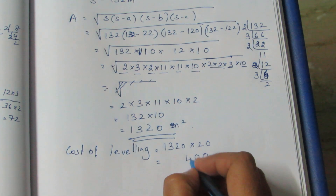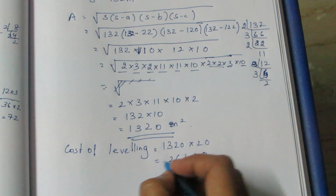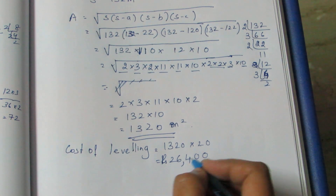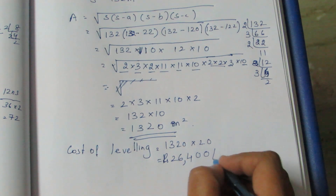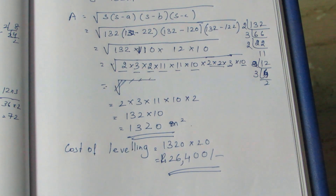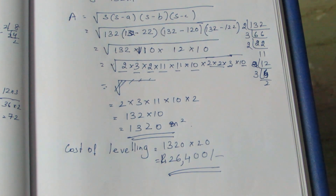Multiplying: 2 twos are 4, 3 twos are 6, 2 ones are 2. The area works out and the cost of leveling is 26,400. This is the answer. Thank you.